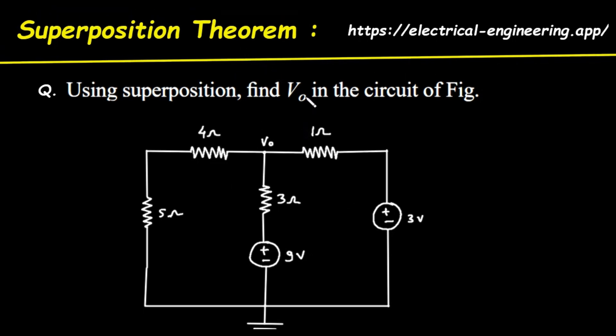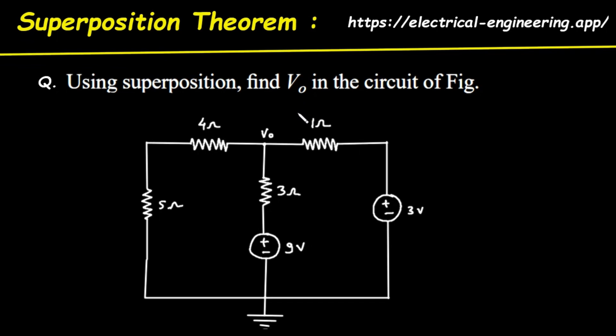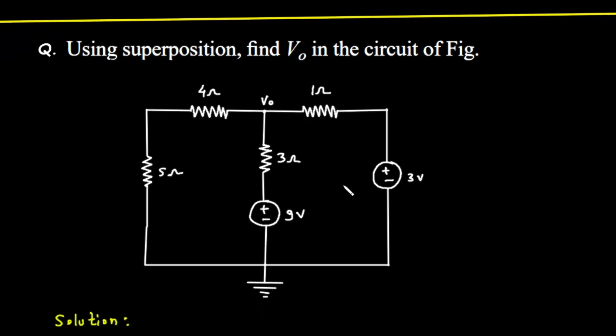If you're new to circuit analysis, don't worry. I'll explain everything from the very beginning, making sure every step is crystal clear. Let's first take a look at our circuit. This is a DC circuit, which means the electricity flows in one direction. We can see several components. We have resistors, which are the zigzag lines, with values of 4 ohms, 5 ohms, 3 ohms, and 1 ohm. Resistors, as their name suggests, resist the flow of current.